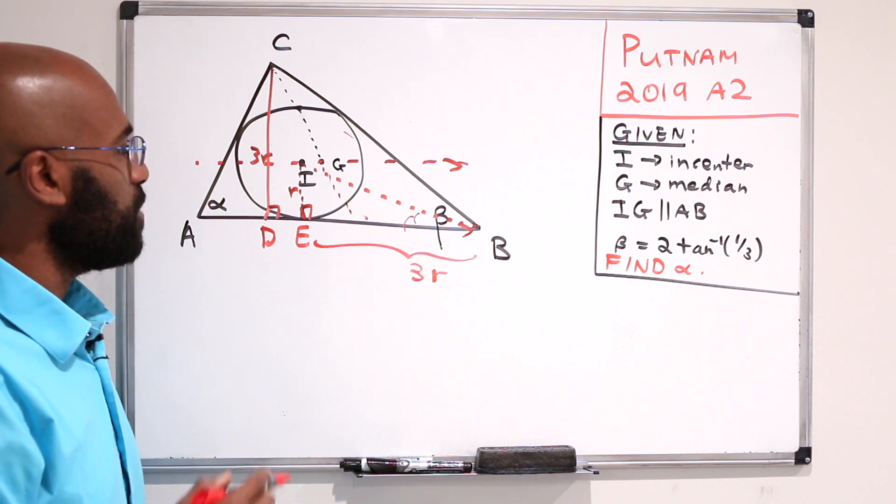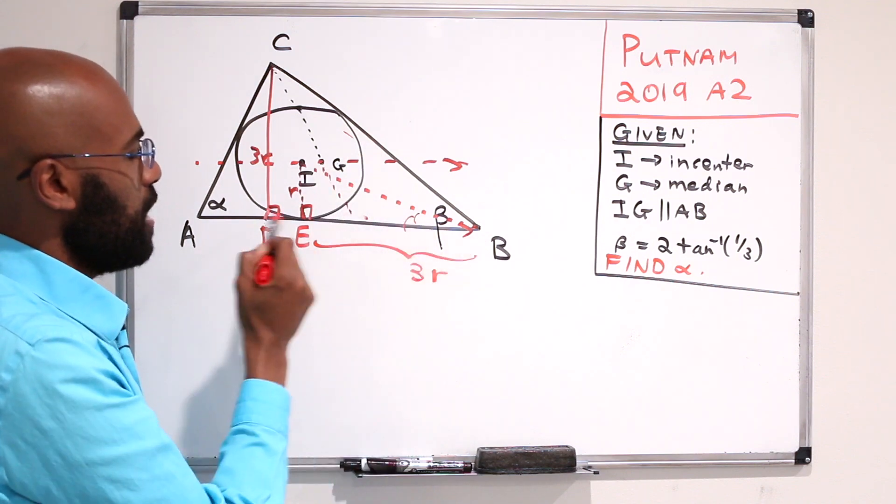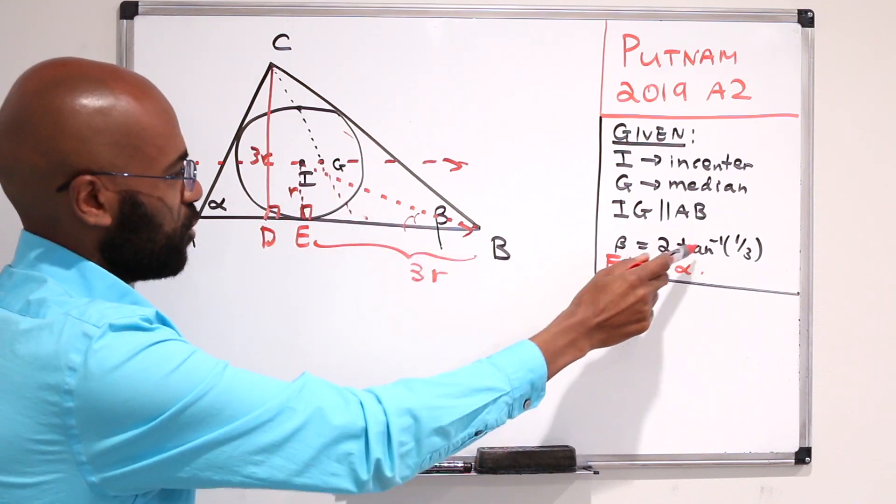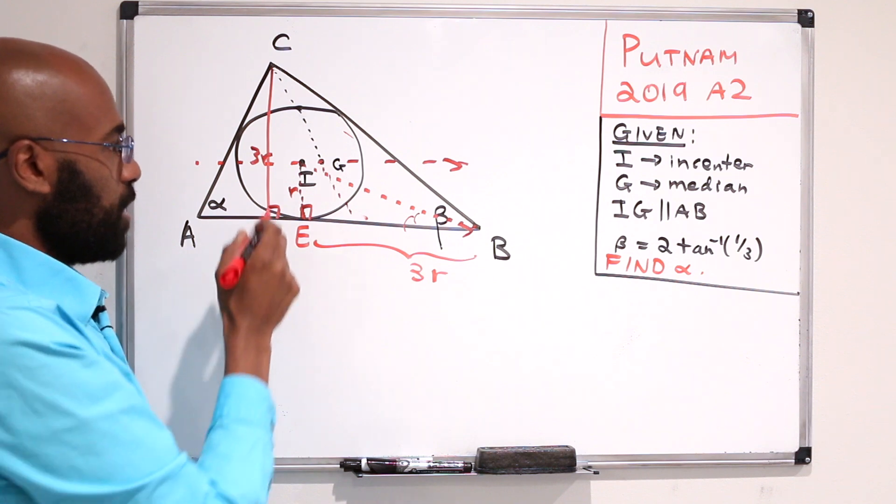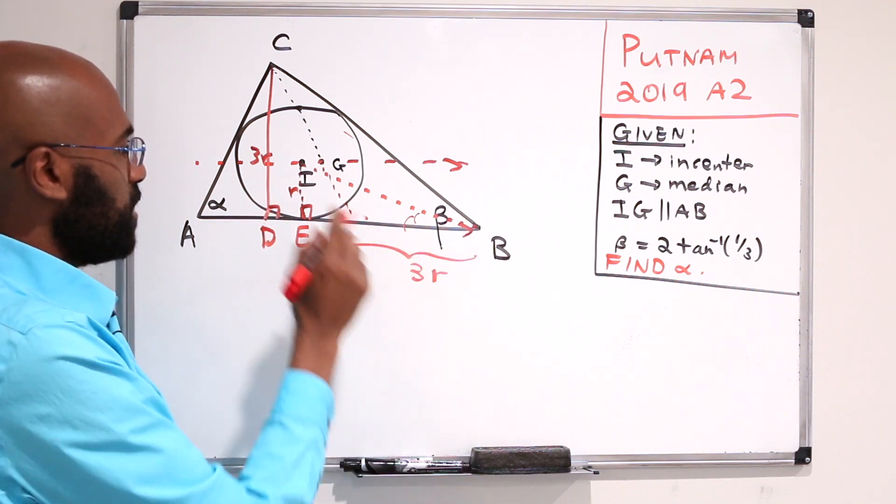Another piece of information we have is about this big triangle. We have this angle beta, which we actually know. Then we have this side length DE, so we can figure out DB. In particular, CD over DB is the tangent of beta.